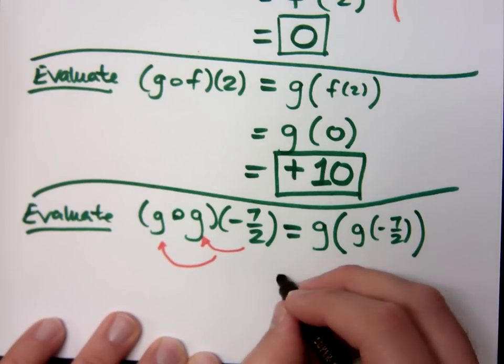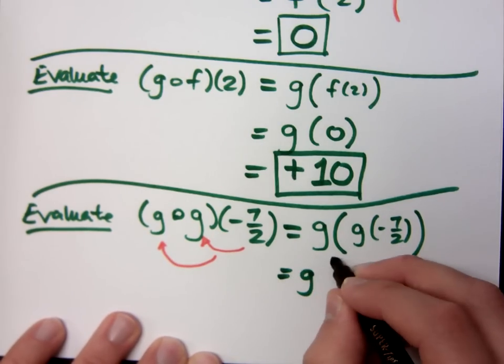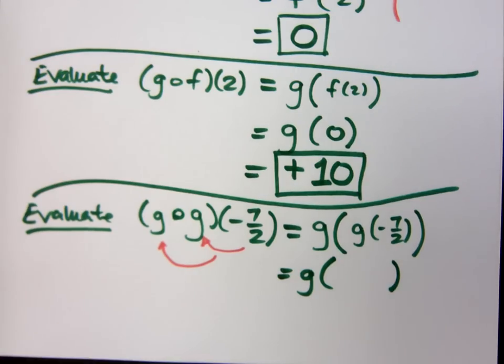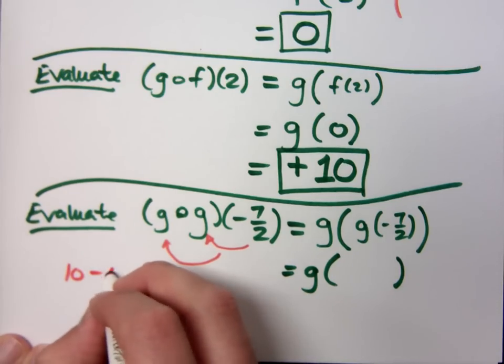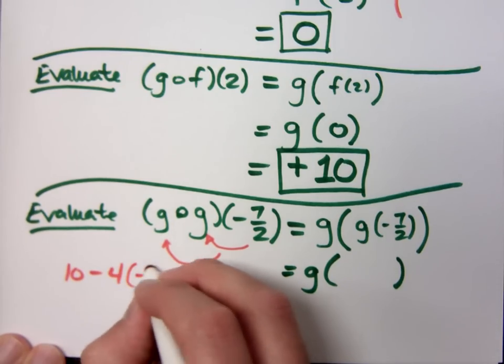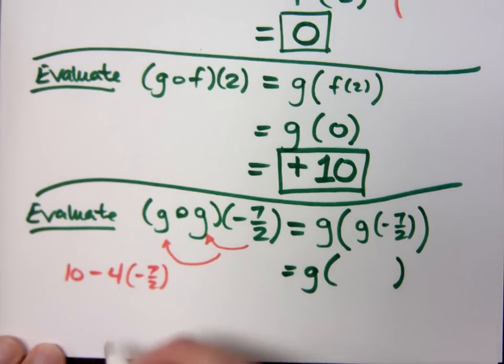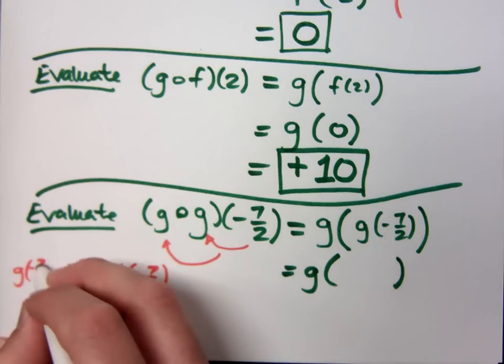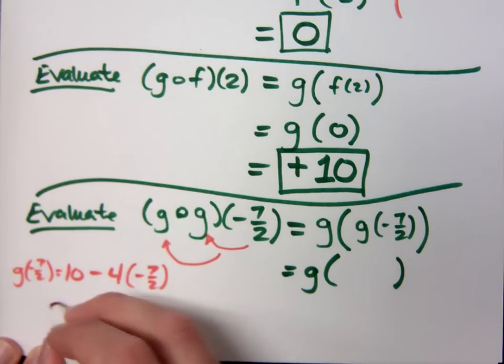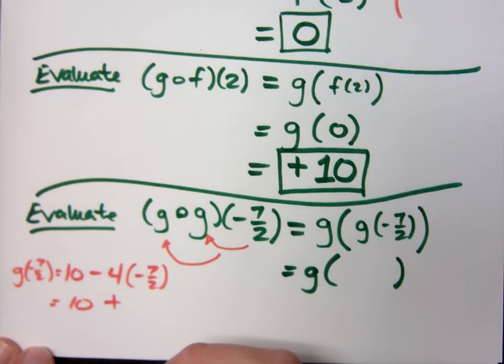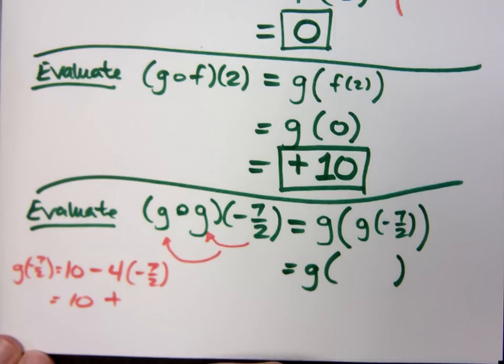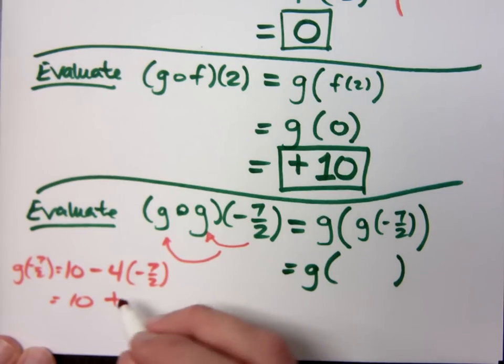If I look at this guy, what is g of negative 7 halves? Remember that g was defined to be 10 minus 4x, so that's 10 minus 4 times negative 7 halves. So it's going to be 10 plus what? 28 halves. What's 28 halves? 14. 28 halves is 14.